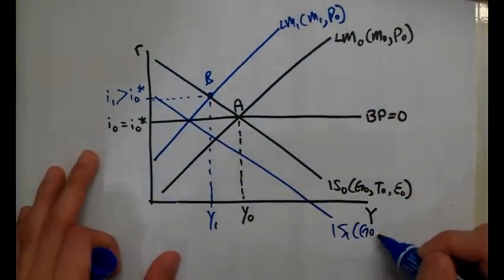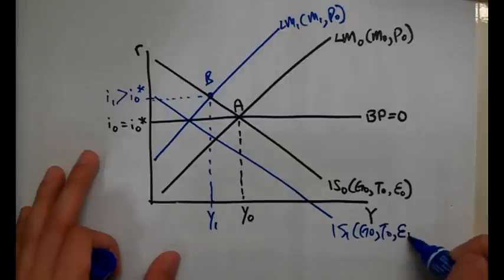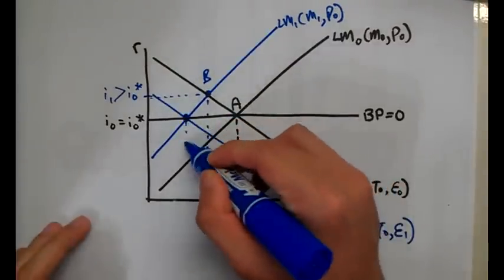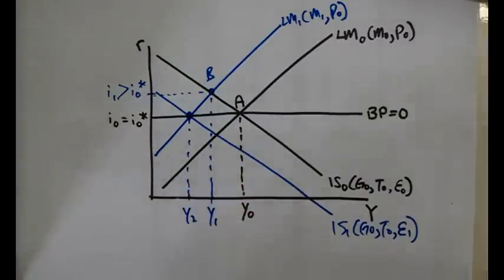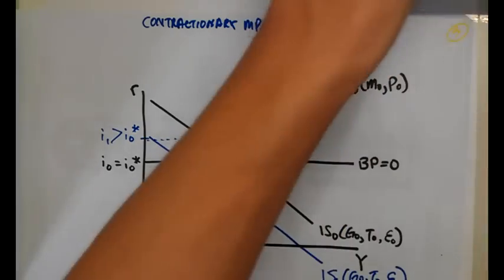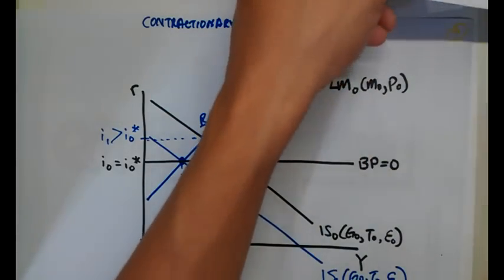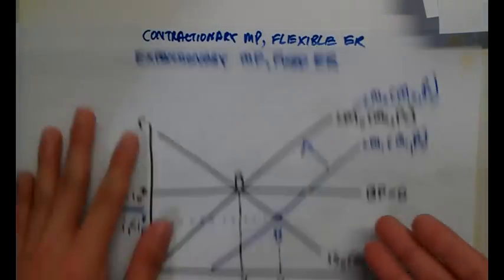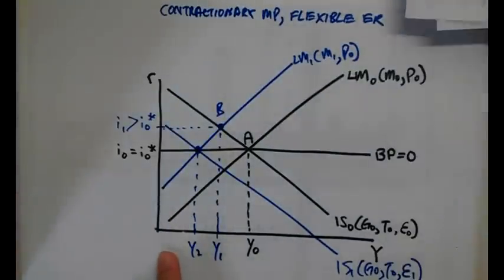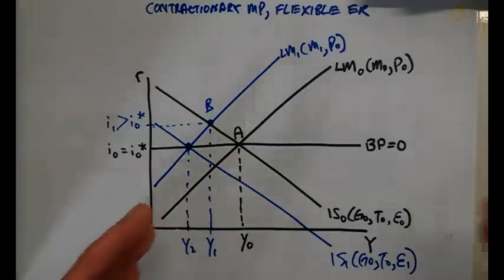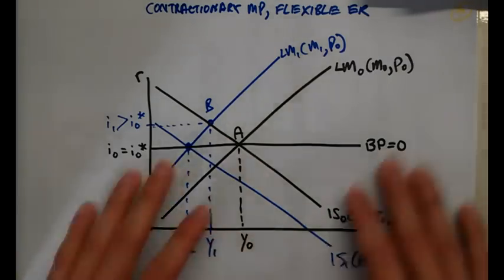This causes the IS curve to shift left until the equilibrium interest rate returns to i-naught. The new IS curve — IS1 — reflects unchanged government spending and taxes but a changed exchange rate from E0 to E1. The new output is Y2 and interest rates return to i-naught. Contractionary monetary policy is effective under a flexible exchange rate system, unlike under a fixed exchange rate where it was completely ineffective.